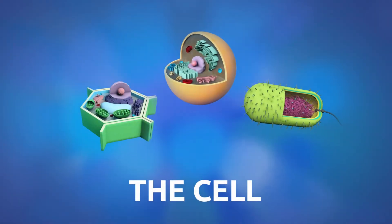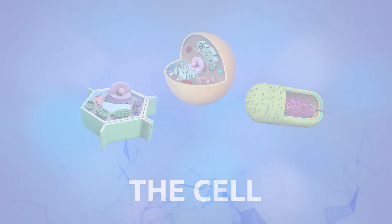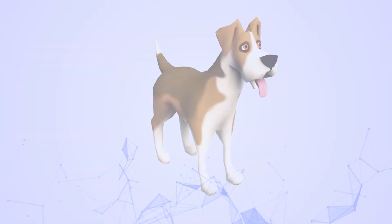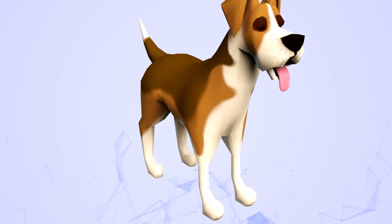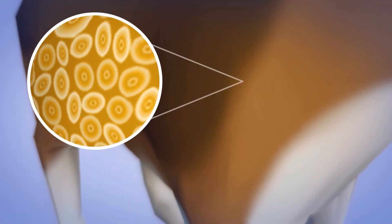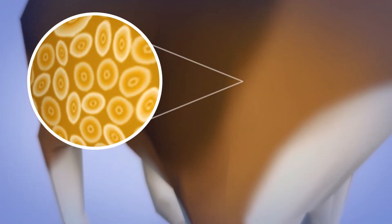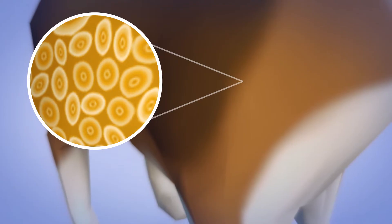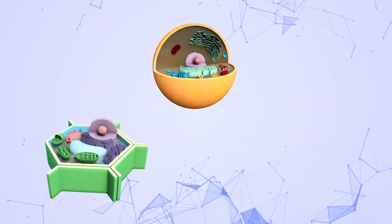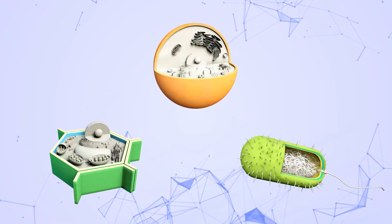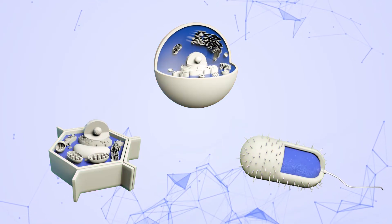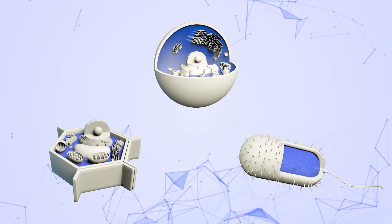A cell is the smallest unit of life of living organisms. Cells are so small that we cannot see them with our naked eyes. Cells have different structures and functions, but all of them are made up by an outer coating and a water-based interior where organelles are found.